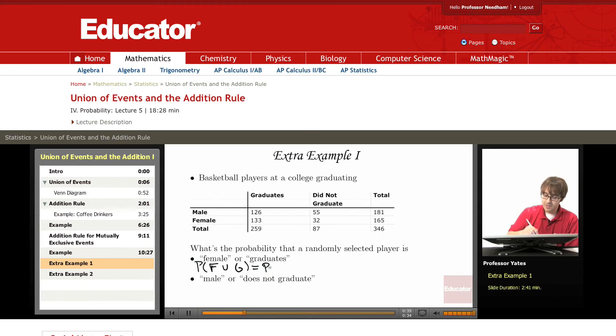This is the probability that they're female plus the probability that they graduate minus the intersection of the two.